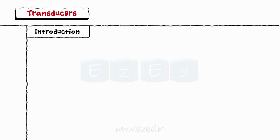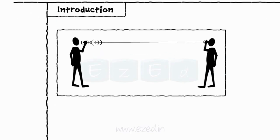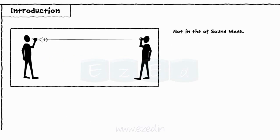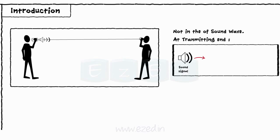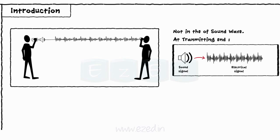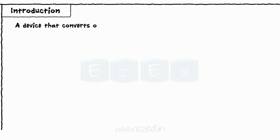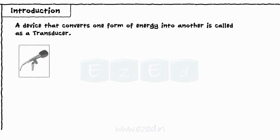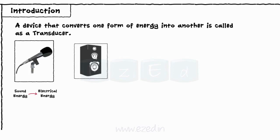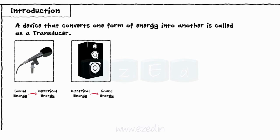Let's start with the introduction. When we talk on a landline, we generate a sound signal. This sound signal is transferred from the speaker to the listener via a telephone cable, but not in the form of a sound wave. First, it is converted into an equivalent electrical signal at the transmitting end. This electrical signal then travels through the telephone cable and at the receiving end, it is converted back to the original sound signal. A device that converts one form of energy to another is called a transducer. Thus, microphone and speaker are two examples of a transducer.